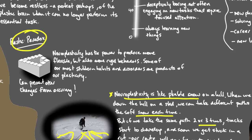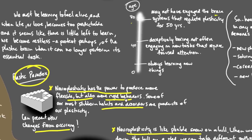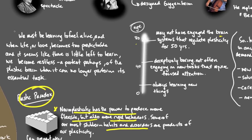Another concept in the book is the plastic paradox. Not only does neuroplasticity have the power to produce more flexible behavior, but it also has powerful rigidity. It can make our behavior more rigid. Some of the most stubborn habits and disorders are products of our plasticity and they can prevent other changes from occurring. So we can also fall into habits much easier because of the very same concept.